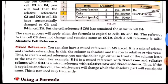Now we have the third type of reference which we are going to study: the mixed reference. We can also have a mixed reference in MS Excel. It is a mix of relative and absolute referencing — a mixture of both. In mixed reference, the column is absolute and the row is relative, or vice versa.